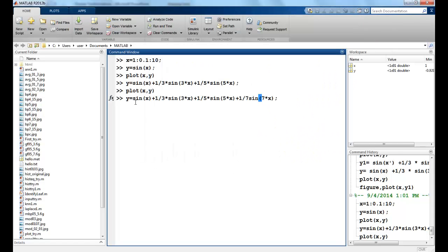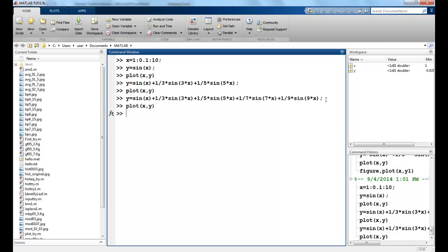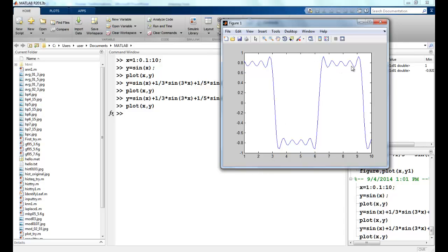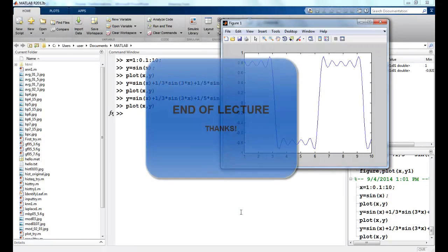I can keep adding more terms to it, plus 1 by 7 sine of 7x, plus 1 by 9 sine of 9x. So you can see it's getting closer to the square wave.